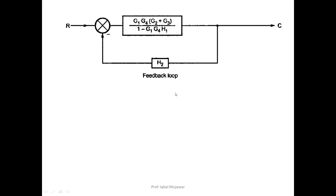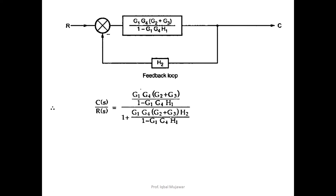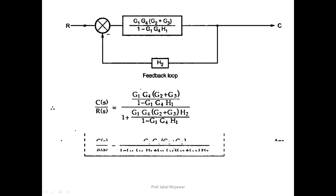Now at the last step, we have another feedback loop. Applying the same rule again — the block in the numerator divided by one, and since the minus sign is there we write the plus sign: G1G4(G2 + G3) divided by (1 − G1G4H1), multiplied by the feedback H2. Simplifying, we get the final transfer function C(S)/R(S) = G1G4(G2 + G3) divided by [1 − G1G4H1 + G1G4(G2 + G3)H2]. That is the reduced block diagram for the first problem.